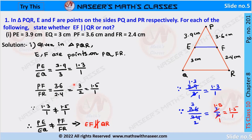After cancellation we get 3 by 2, and further simplification gives 1.5. Here 1.3 is not equal to 1.5, so we can say that PE by EQ is not equal to PF by FR. From this we can conclude that EF is not parallel to QR.